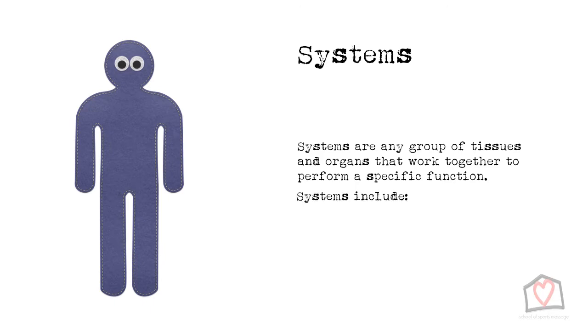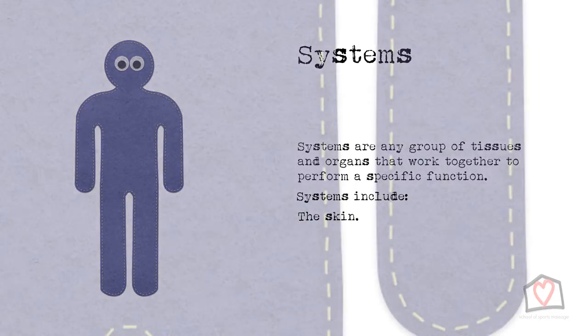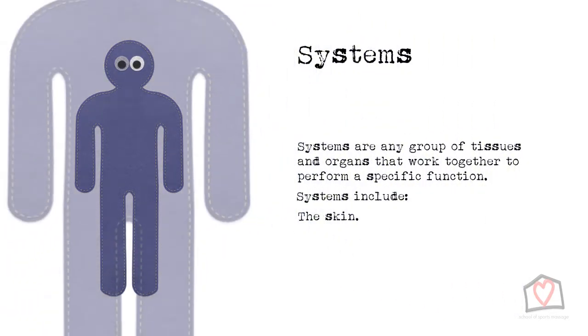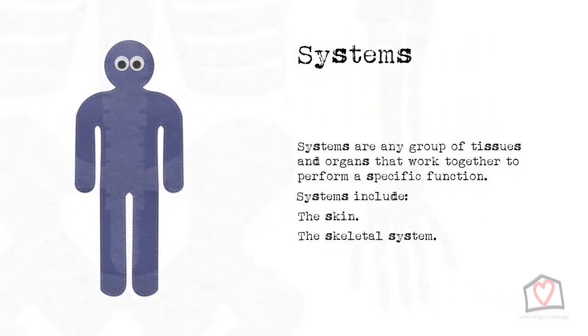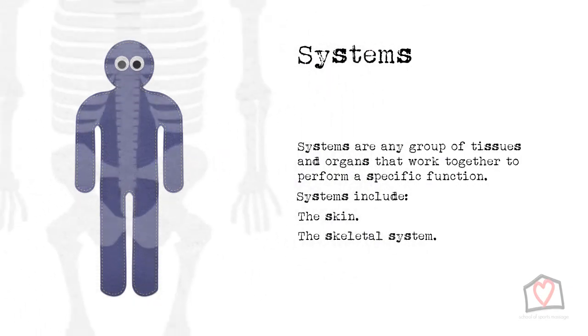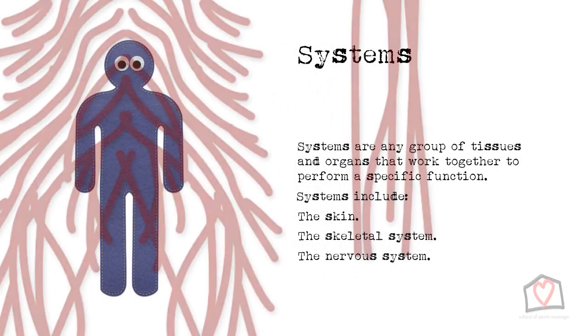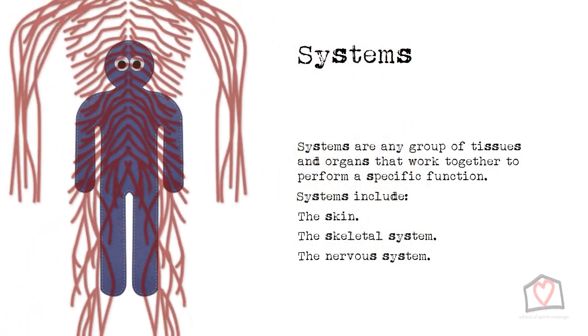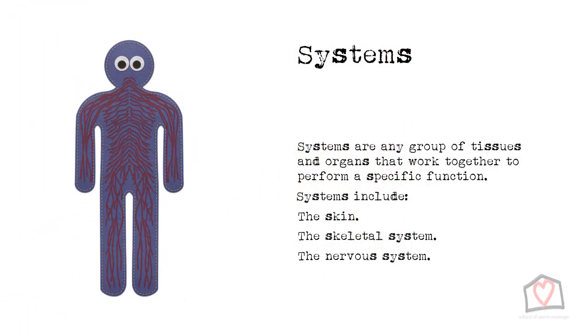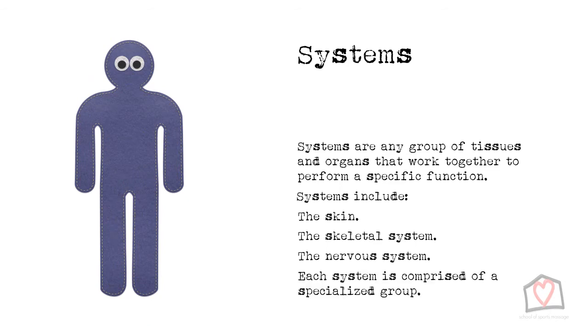These systems include the skin or integumentary system, skeletal, endocrine, and nervous, just to mention a few. Each system comprises a specialised group of organs and tissues.